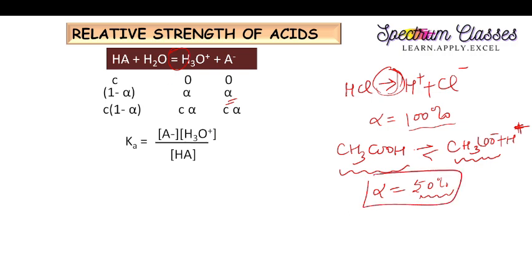Say this acid dissociates to extent alpha. The concentration at time t will be (1 - α). Suppose at t = 0 we have 100% CH3COOH. After some time, suppose 50% dissociates — so we have 50% CH3COOH remaining and 50% CH3COO- formed. That is the concept of (1 - α): if α = 0.5 then (1 - α) = 0.5; if α = 0.6 then (1 - α) = 0.4. This is how alpha is important in numericals.